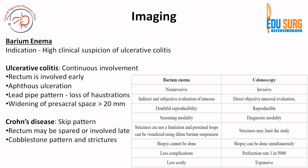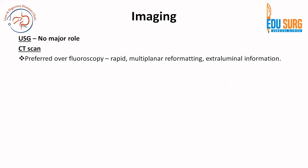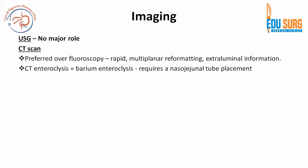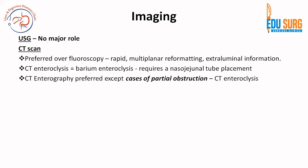In today's world, fluoroscopy is used less commonly. More commonly we use CT scan, as ultrasound has no major role in these conditions. CT scan is preferred over fluoroscopy because it is rapid, provides multiplanar reconstruction (MPR) images, and gives extra-luminal information. CT enteroclysis equals barium enteroclysis and requires nasojejunal tube placement. CT enteroclysis is not commonly done — the accepted indication is partial obstruction. For all other indications, CT enterography is preferred.